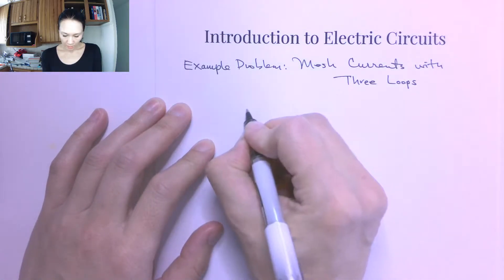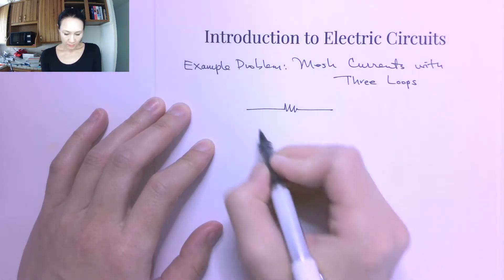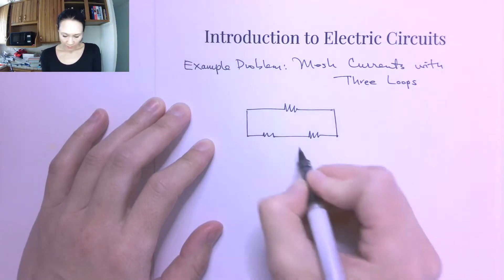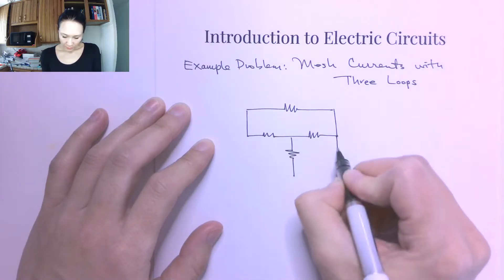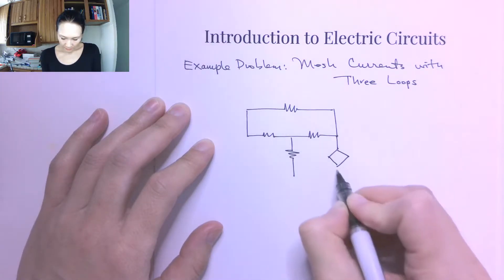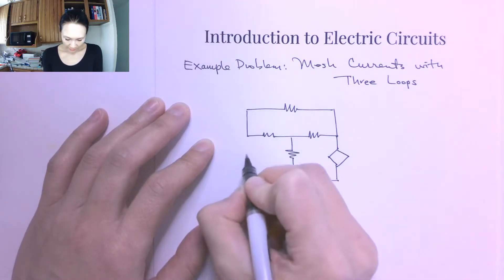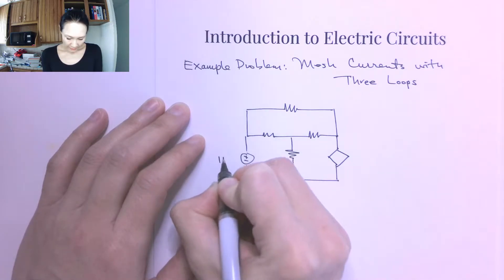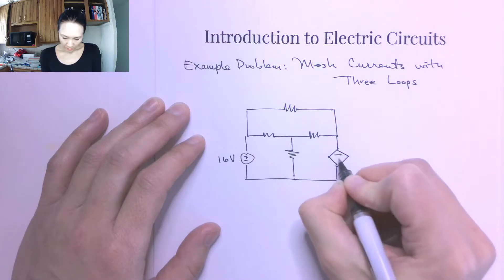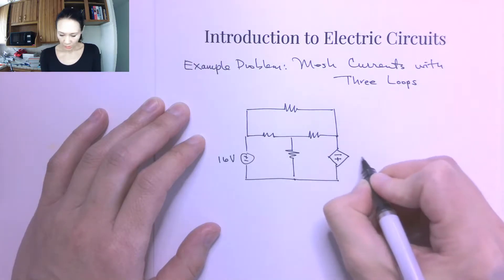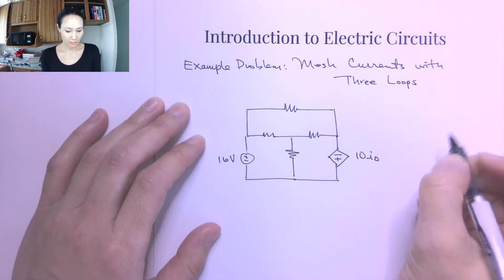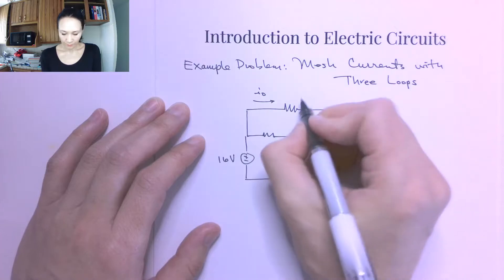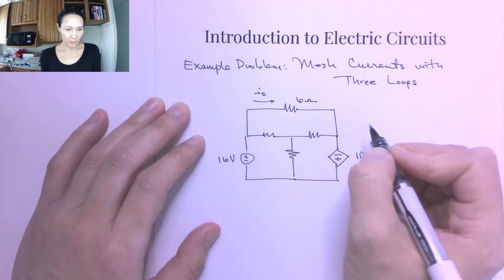Let's do an example of a circuit using mesh currents to solve, and this one's going to have three loops. I'm also going to put in a dependent source, just so you can see how we would handle that, and here's an independent source. We'll let this one be 16 volts, put in a down orientation, and this will be 10 times I-naught, where I-naught is the current that goes through this top resistor, which has a value of 6 ohms.